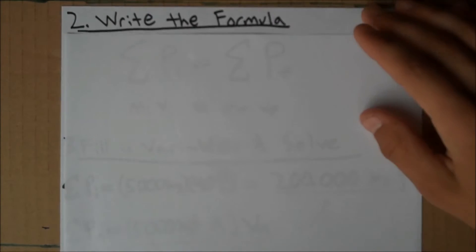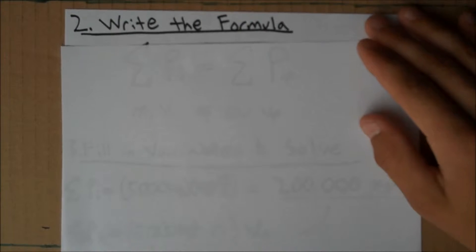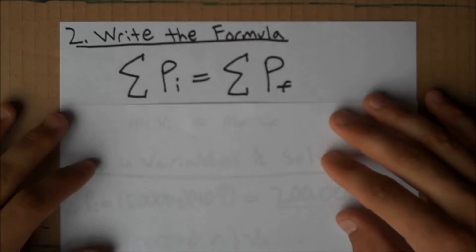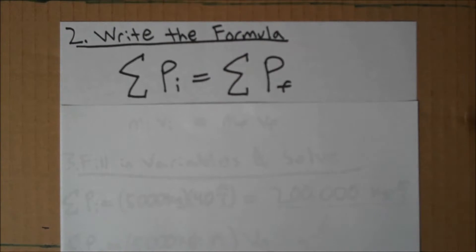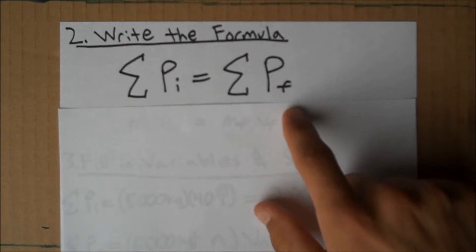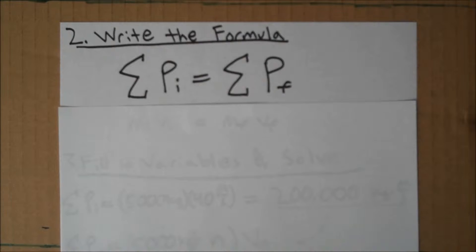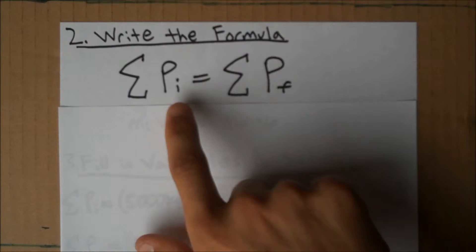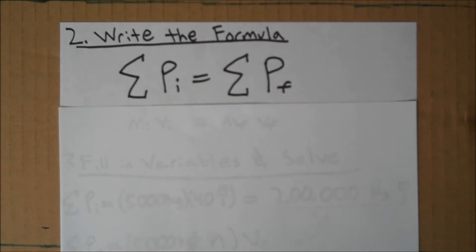So, let's write the general equation that we're going to be using, which is conservation of momentum. Initial and final momentums must be equal, and this is before and after any number of collisions.